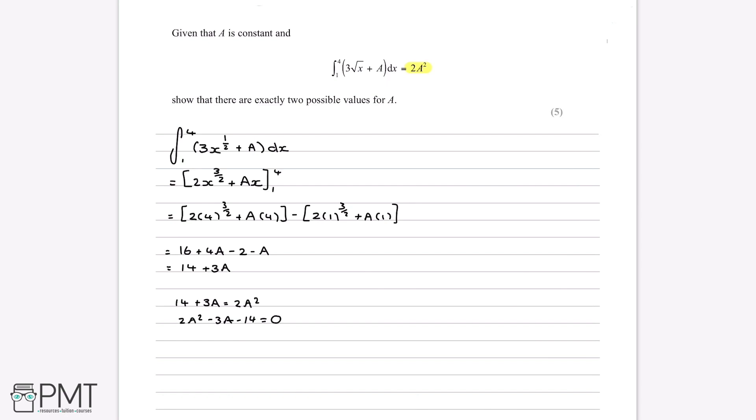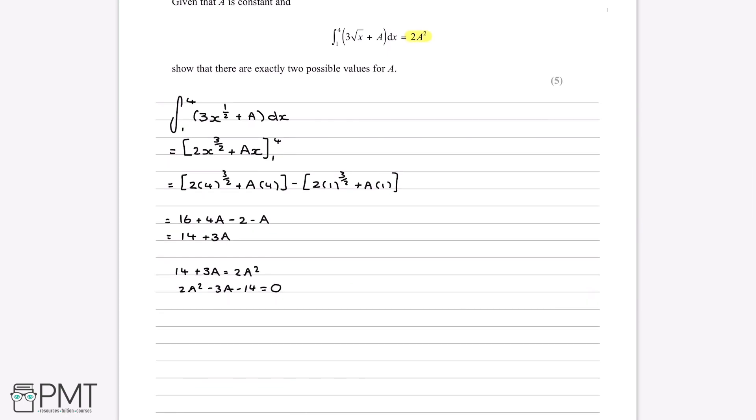So the way we can now solve this is either using the quadratic formula or we can do it by inspection, by looking at it. And this is one of the questions where it becomes easier actually to just do it by looking at it. So the way we'd solve it is we need to look for two numbers that multiply to make minus 28, because this is what the 2 and the minus 14 multiply to make. So we need to look for two numbers that multiply to make minus 14 and add to make minus 3.